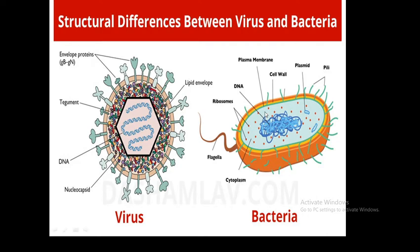This shows the structural difference between a virus and bacteria — there is a big difference. You can see that bacteria has a cell wall, cell membrane, DNA, ribosomes, plasmid, pili, cytoplasm, and flagella. The virus structure is totally different — it has DNA, a nucleocapsid, envelope, proteins, and integuments.